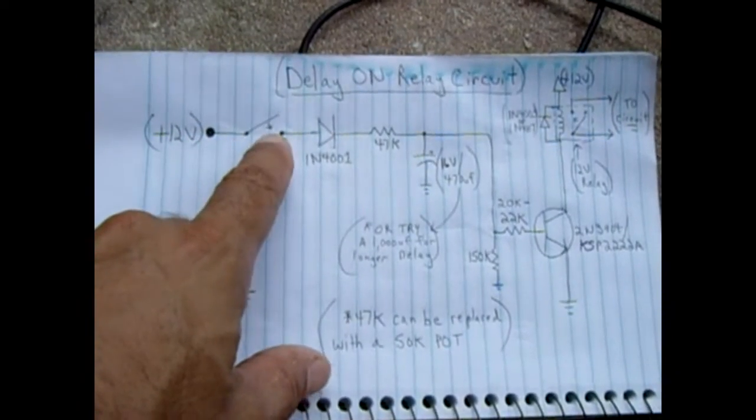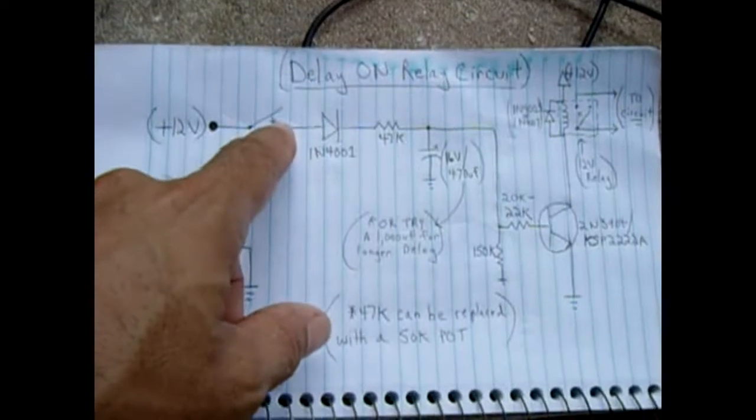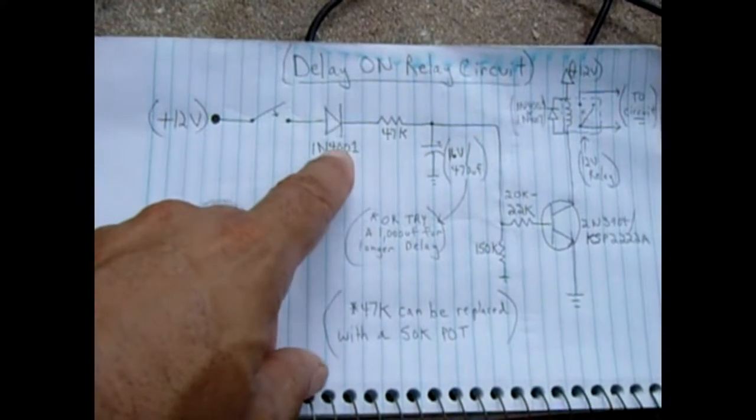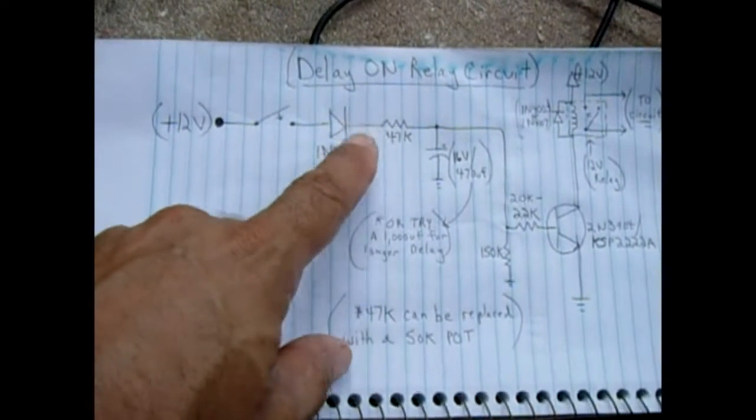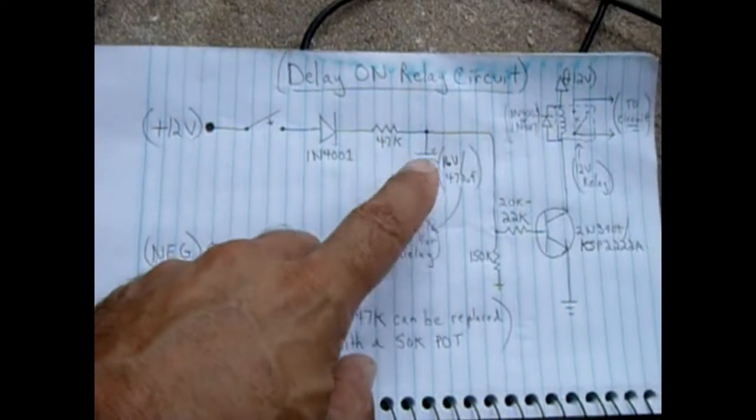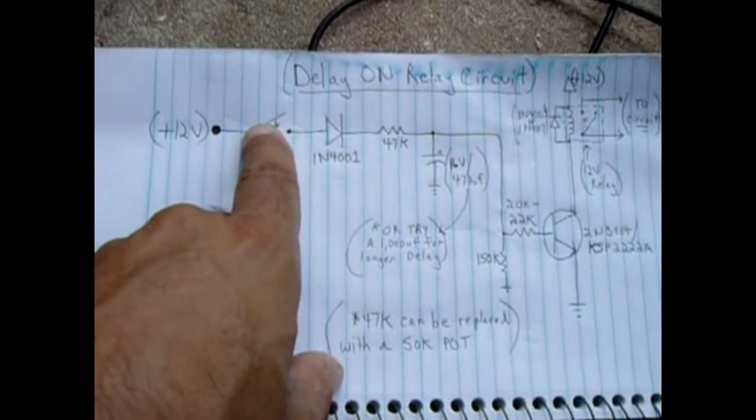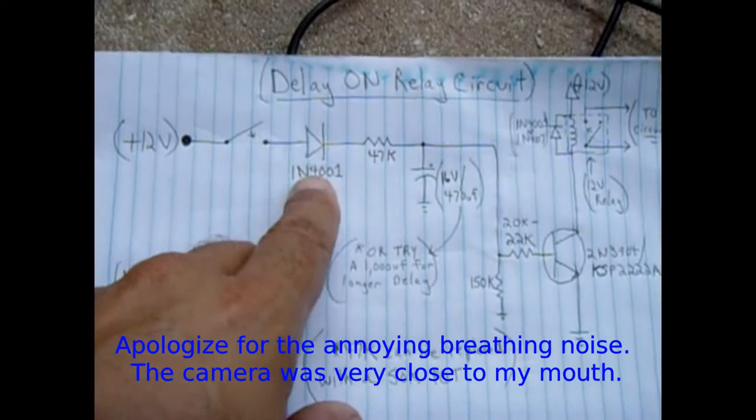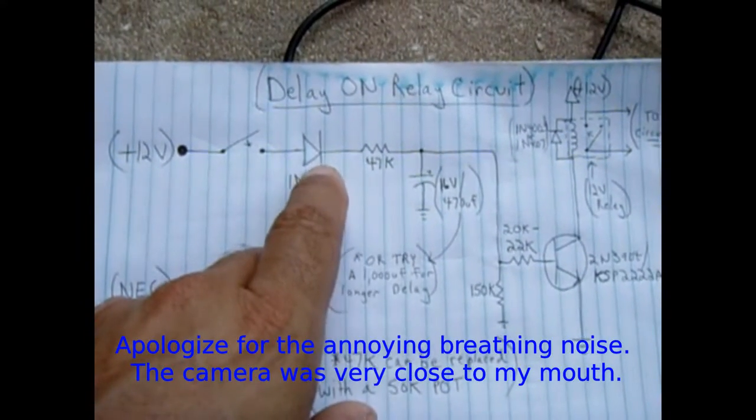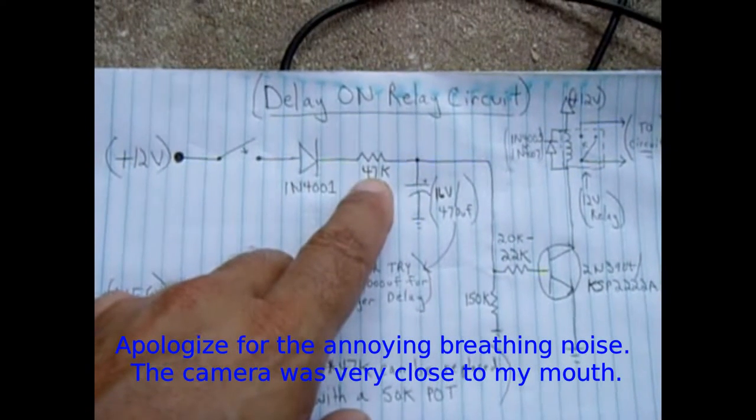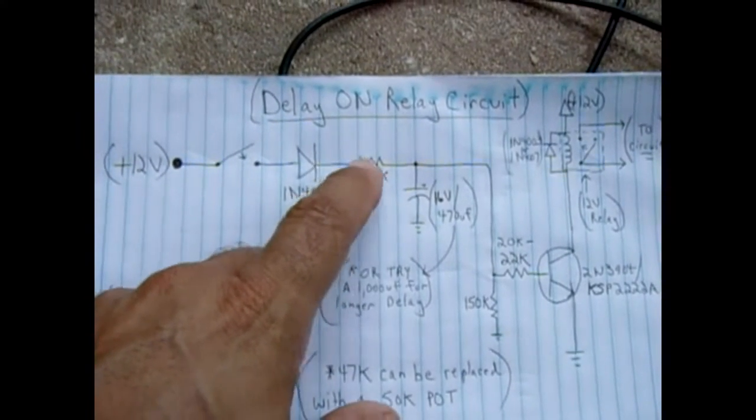You have 12 volts going through a switch which activates the circuit, going through a 4001 diode which is not really necessary because you do have a switch, and when this capacitor charges it cannot go backwards once the switch is open. But it's not going to hurt to leave it.